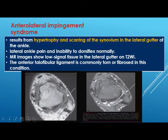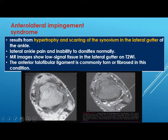Anterolateral impingement syndrome results from hypertrophy and scarring of the synovium in the lateral gutter of the ankle — the space between the tibia and the fibula. There is no anterior tibiofibular ligament visible, and on T2 it is totally replaced by low signal, which is diagnostic for anterolateral impingement syndrome.